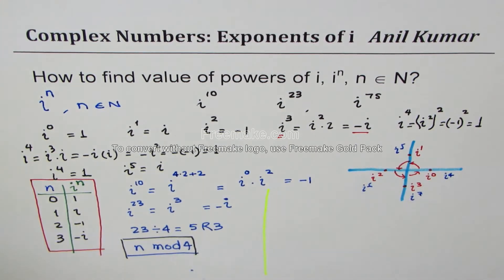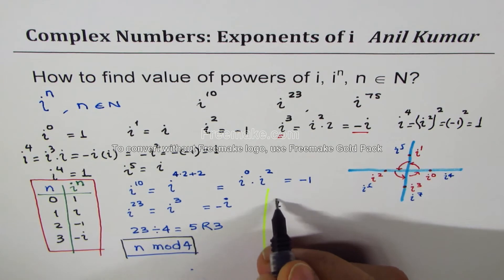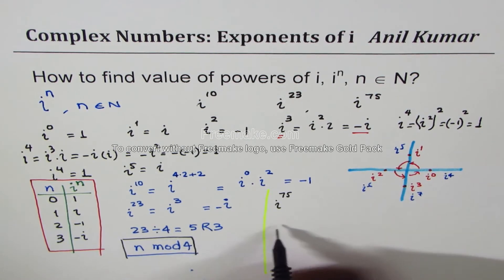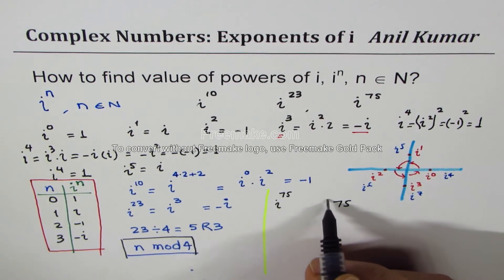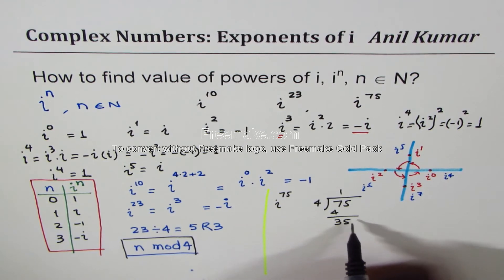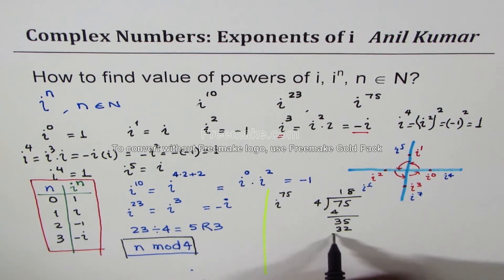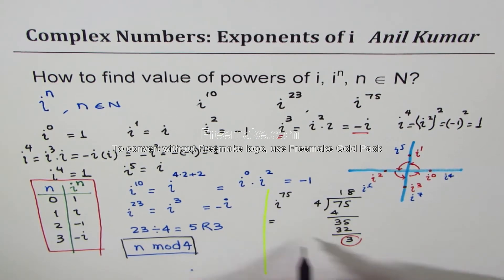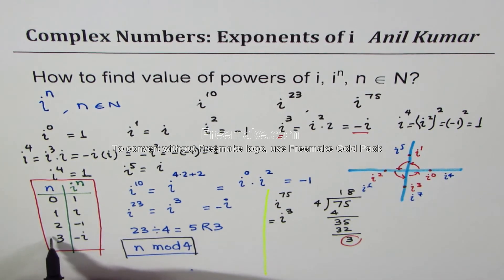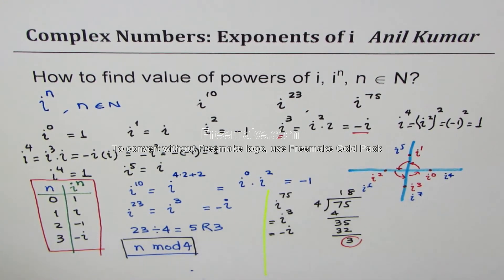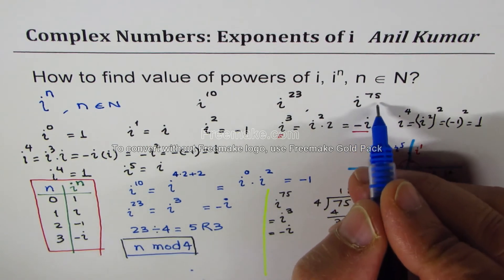Let's do i to the power of 75. Dividing 75 by 4: 4 times 18 is 72, so the remainder is 3. Therefore i^75 equals i^3, which equals minus i. So i to the power of 75 is minus i.